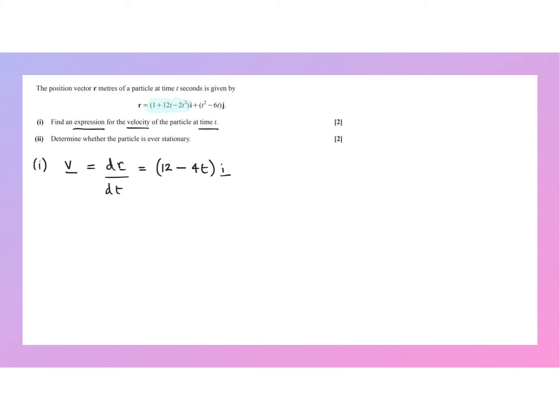So there's the derivative of the i component. And then for the j component, we need to differentiate this part here. So that's plus 2t minus 6j. So there's the expression for the velocity at time t.